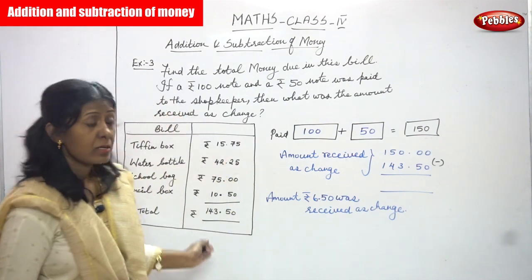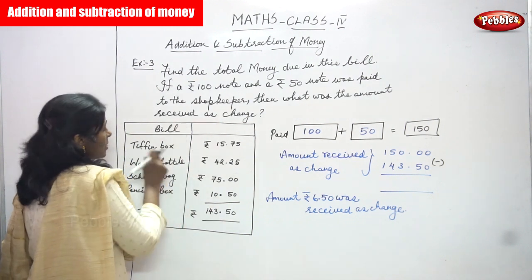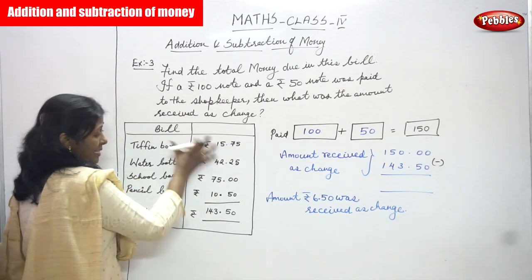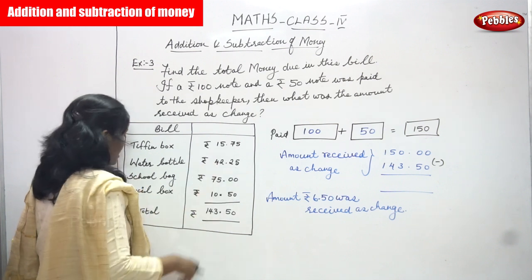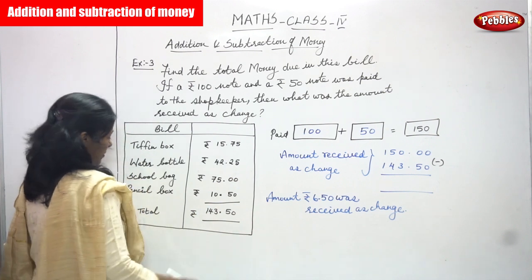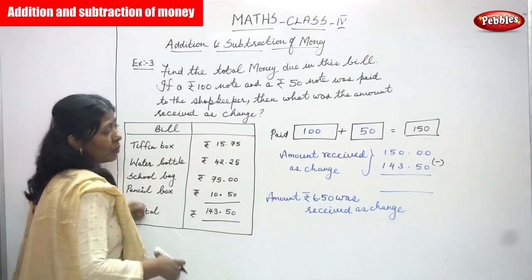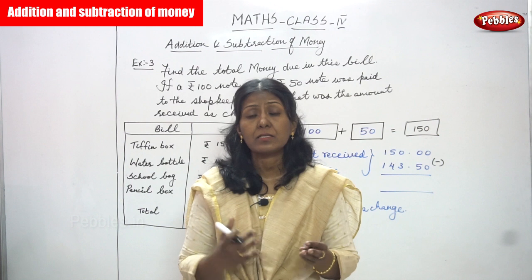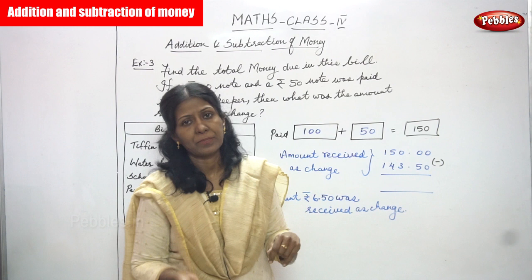The bill is given. Let's check the bill. First one is pencil box rupees 15.75. Water bottle rupees 42.25. School bag that is 75 rupees. And pencil box that is 10 rupees 50 paise. Rupees and paise combined together as money. The shopkeeper prepared the bill and gave it to the person.